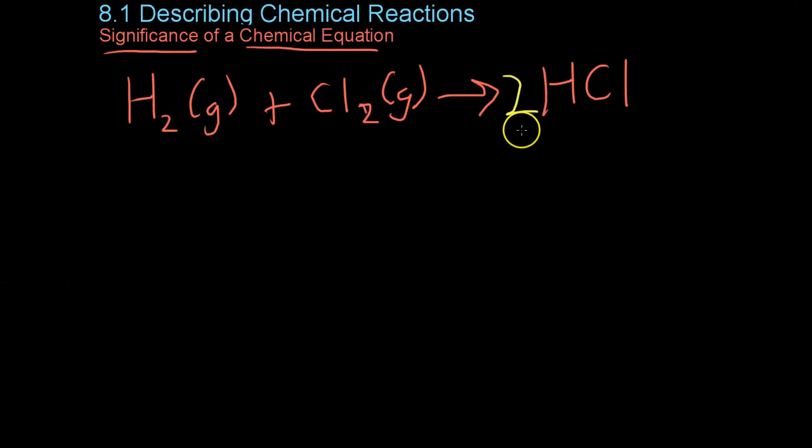Now these coefficients indicate the relative amount of reactants and products in a chemical reaction, and it also indicates the minimum amount of each item required to satisfy this equation. So for example, you could take one hydrogen molecule, one chlorine molecule, and if you reacted them, you would get two molecules of hydrogen chloride.